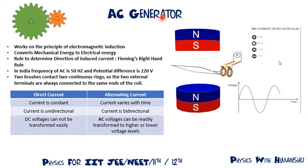Today's topic is the AC generator. An AC generator is a device which works on the principle of electromagnetic induction. Magnetic flux depends on four things: N, B, A, and theta. In an AC generator, we are changing theta — the angle between the area vector and the magnetic field — to change the magnetic flux. When there is a change in magnetic flux, there will be an induced EMF.